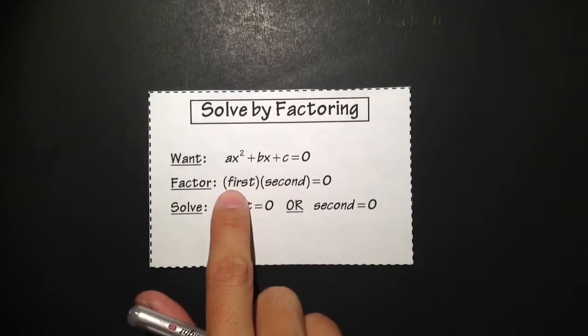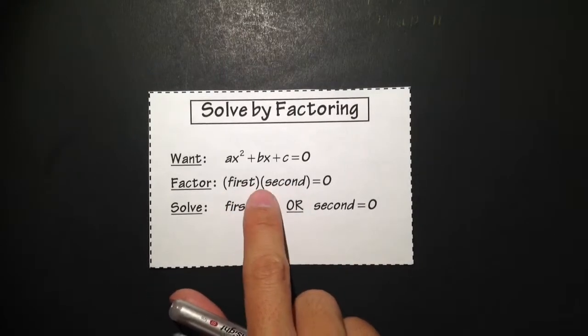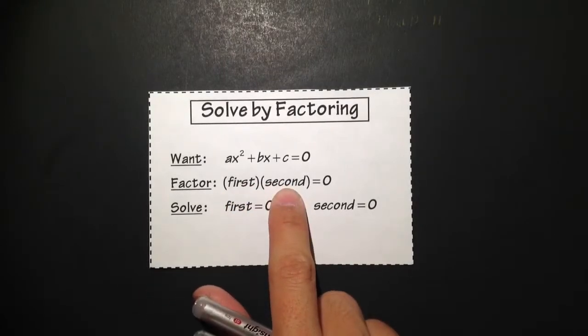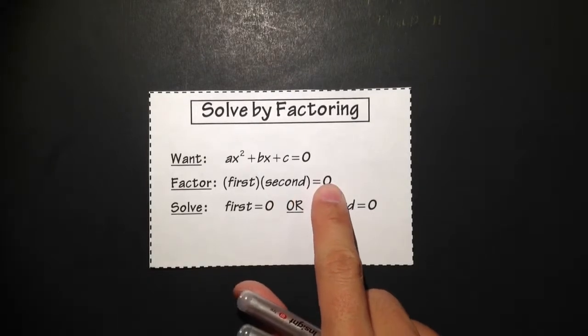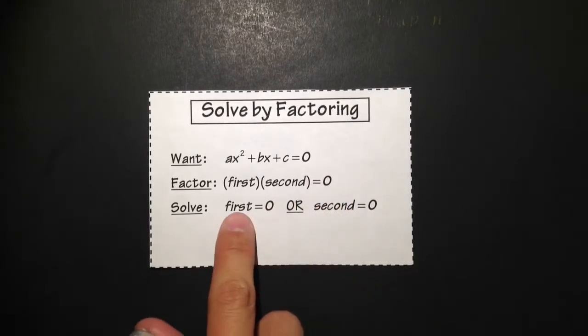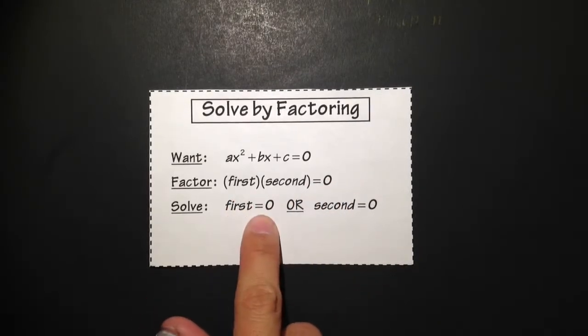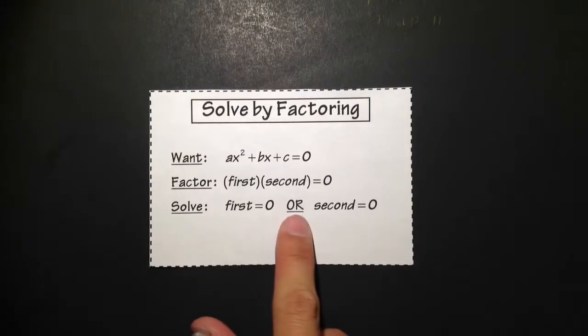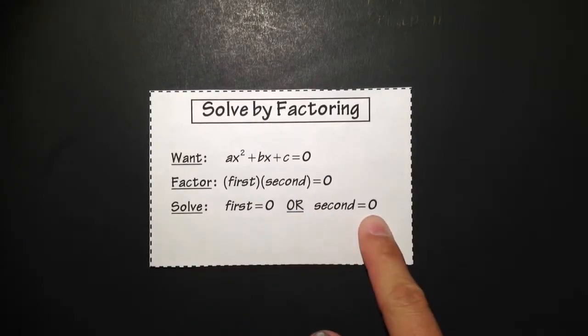The first factor times the second factor is equal to zero. Then you break down into: the first factor is equal to zero, or the second factor is equal to zero.